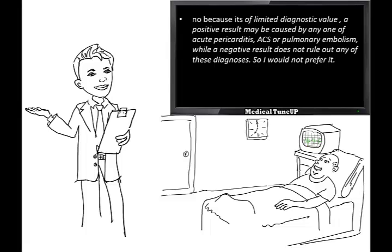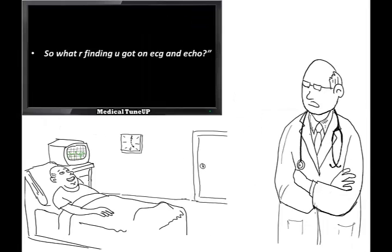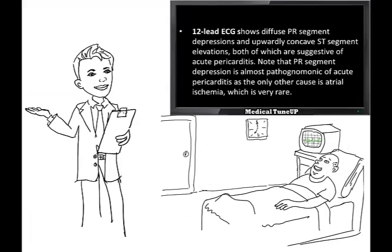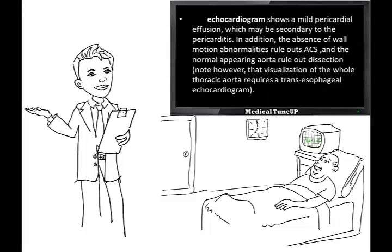So what are the findings you got on ECG and echo? 12-lead ECG shows diffuse PR segment depression and upwardly concave ST segment elevation, both of which are suggestive of pericarditis. Note that PR segment depression is almost pathognomonic of acute pericarditis, as the only other cause is atrial ischemia, which is a very rare condition. His echocardiogram shows a mild pericardial effusion which may be secondary to pericarditis.